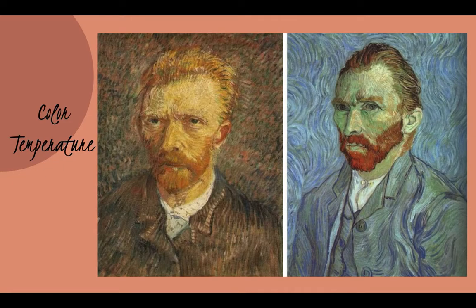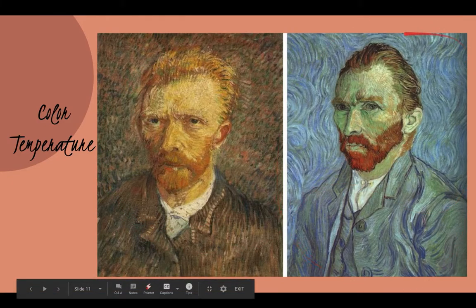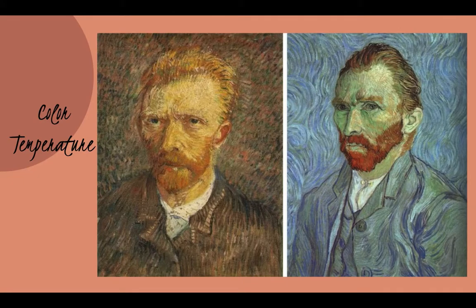Also be thinking about color temperature in your works. Here are two self-portraits by Van Gogh — one is predominantly a warm color scheme and the other is predominantly a cool color scheme. If you want your piece to feel very unified, you should focus mostly on one type of color scheme, either warm or cool. If your pieces include every vibrant rainbow color, it may not feel as unified or as calm.